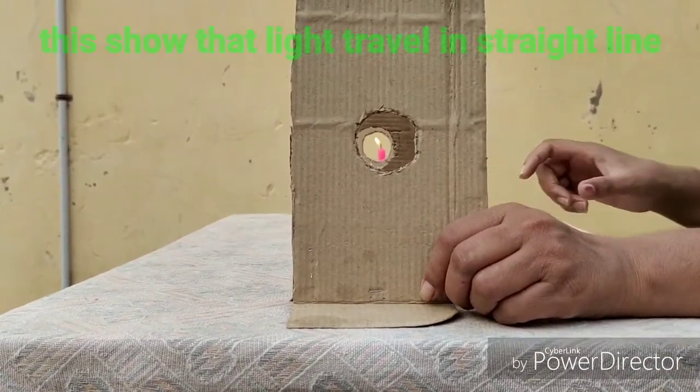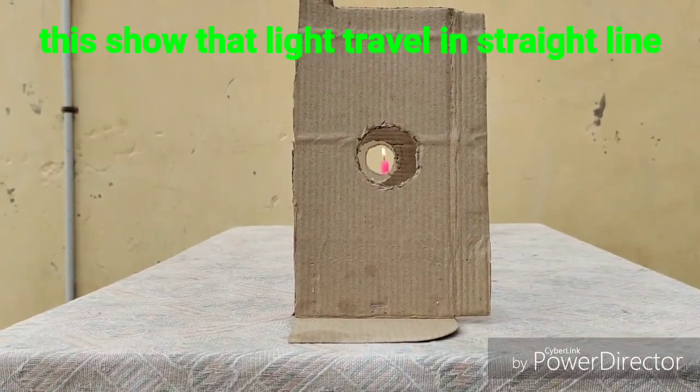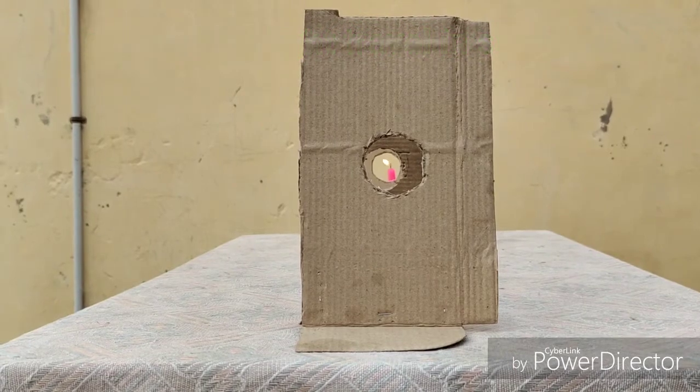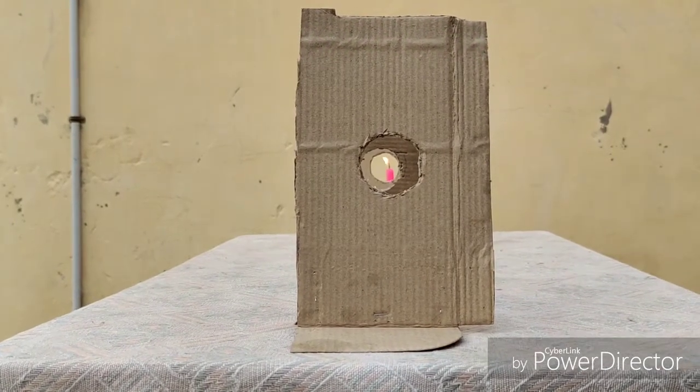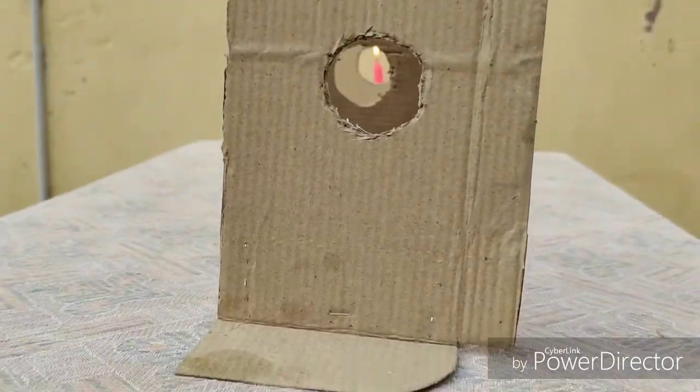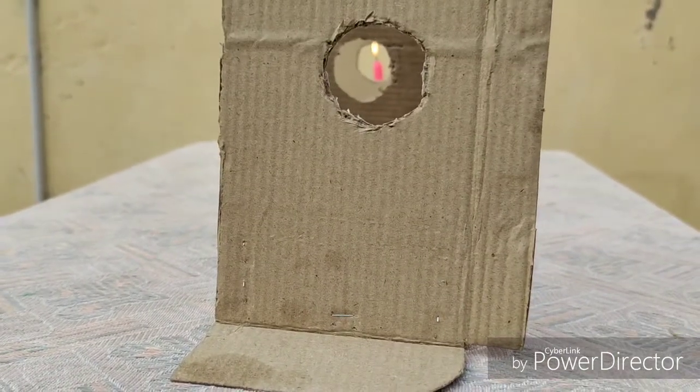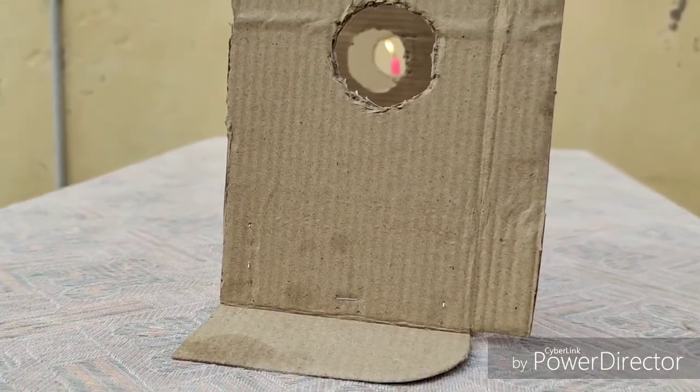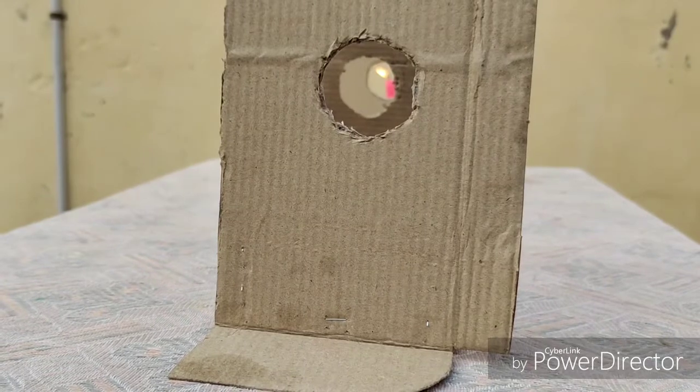This activity showed that light travel in straight lines. Because when all the cardboard in a line, we are able to see the flame of candle. But when these are not in line, we are not able to see the flame of candle. So the light travel in a straight line.